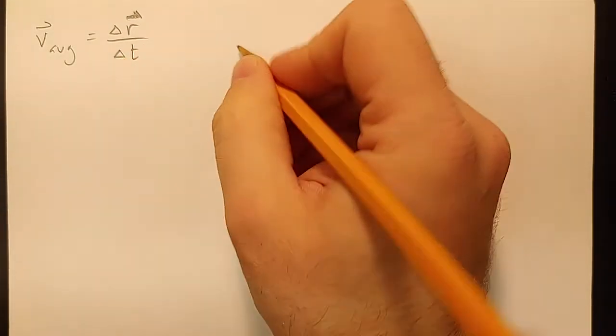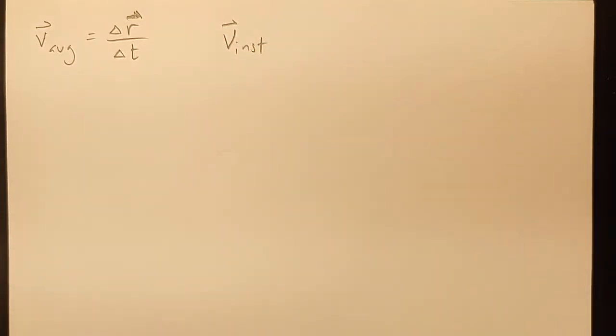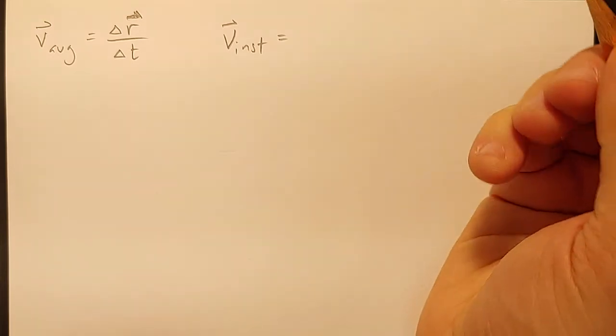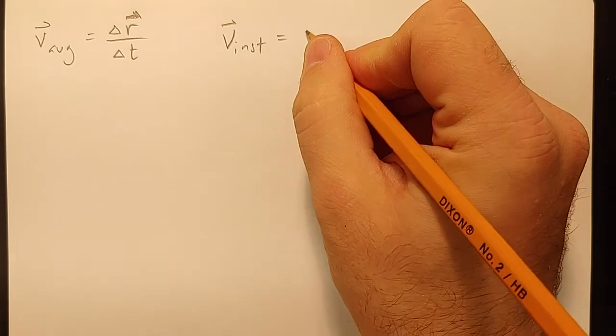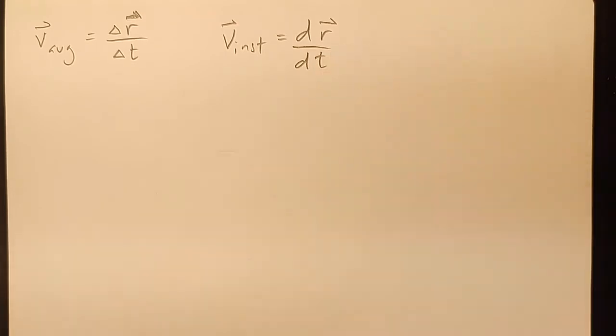The instantaneous velocity, so the velocity at a particular moment is, just like before, found at the derivative, the derivative of the position with respect to time. So dr dt.